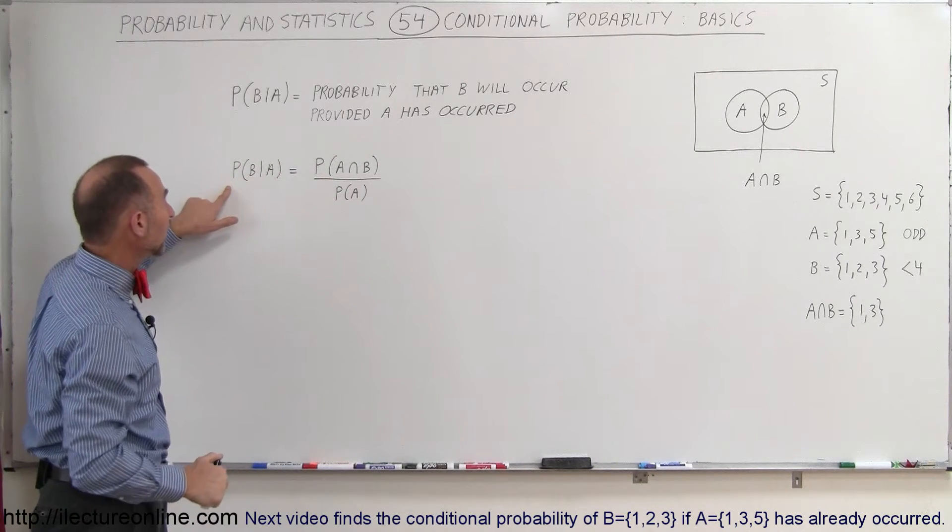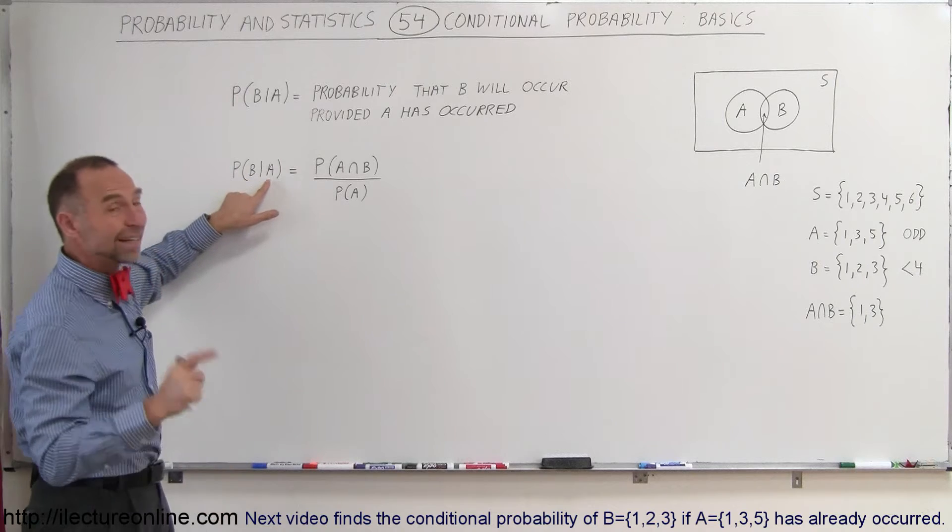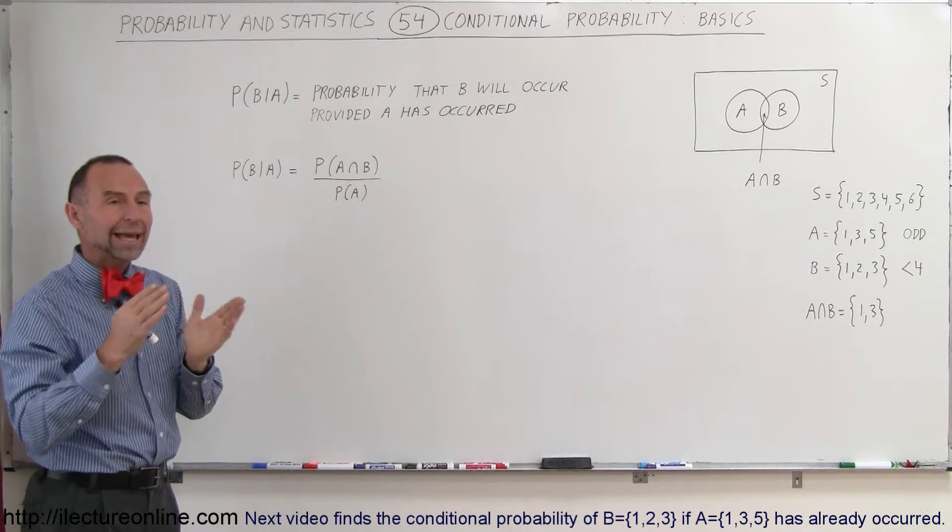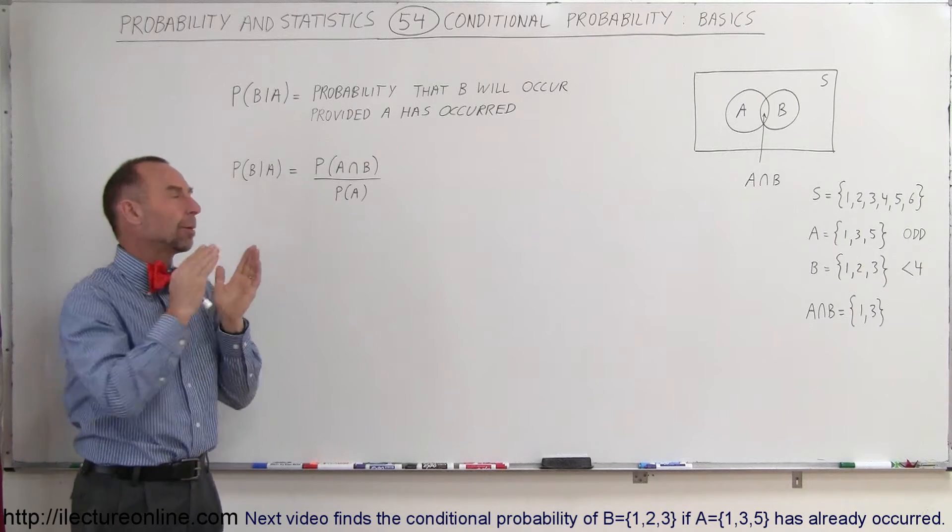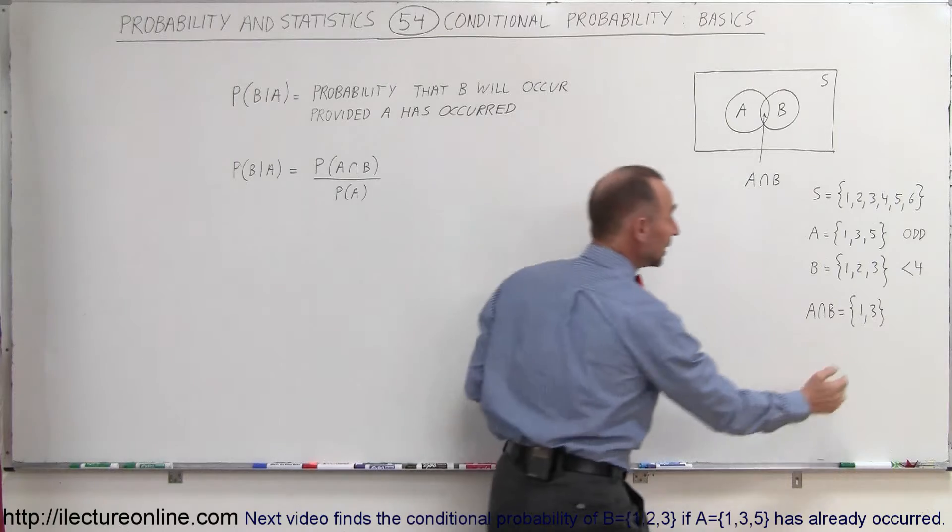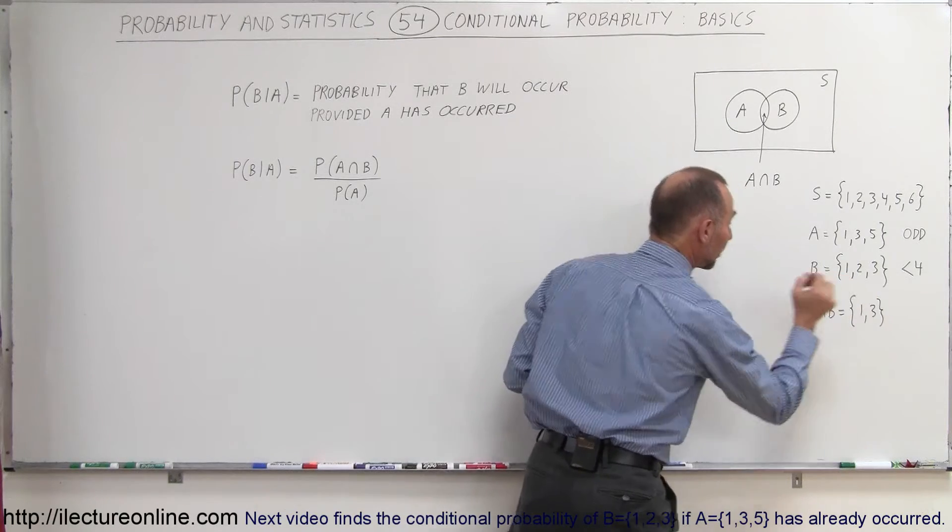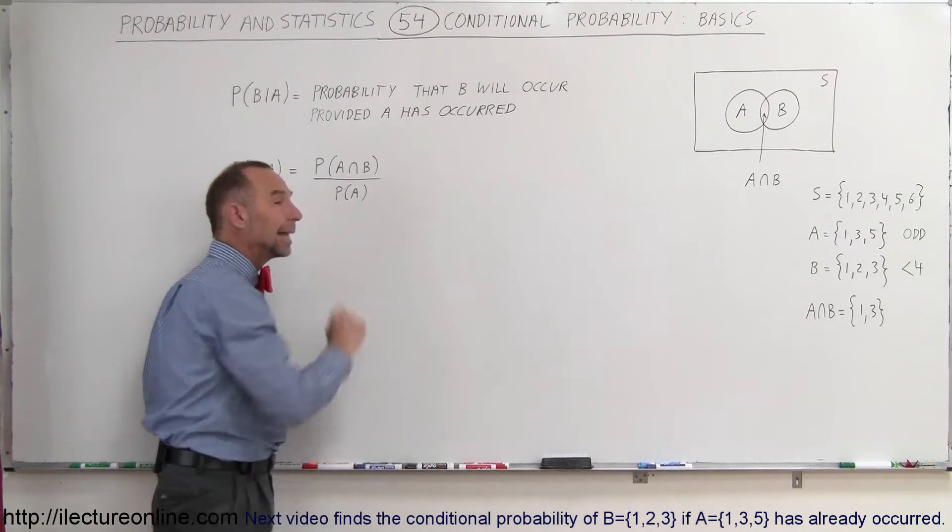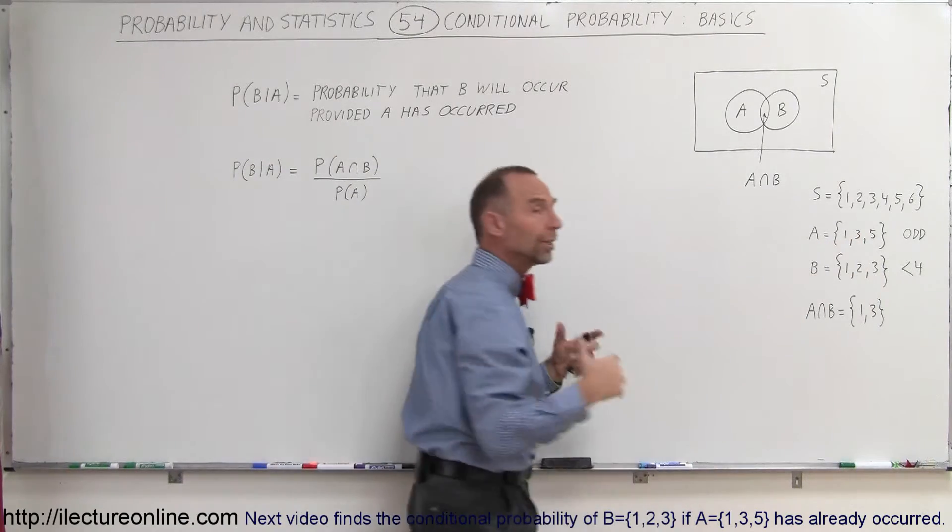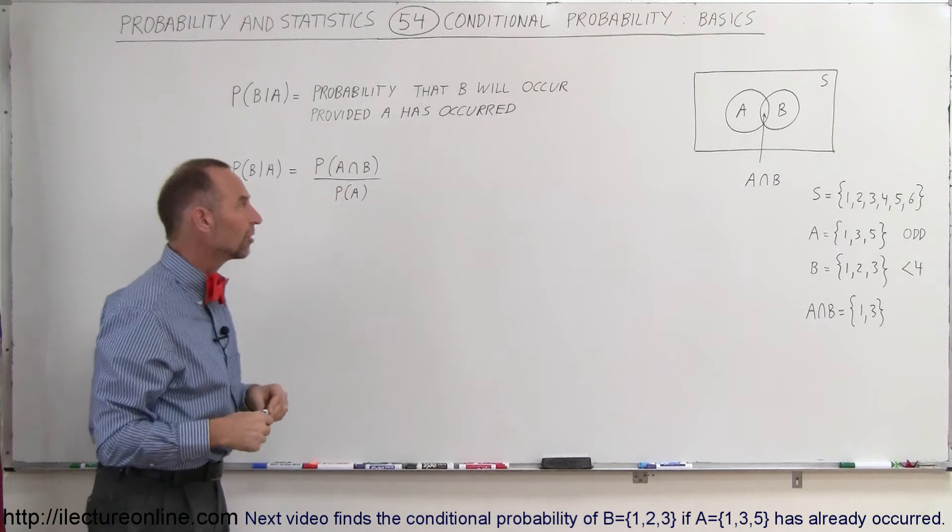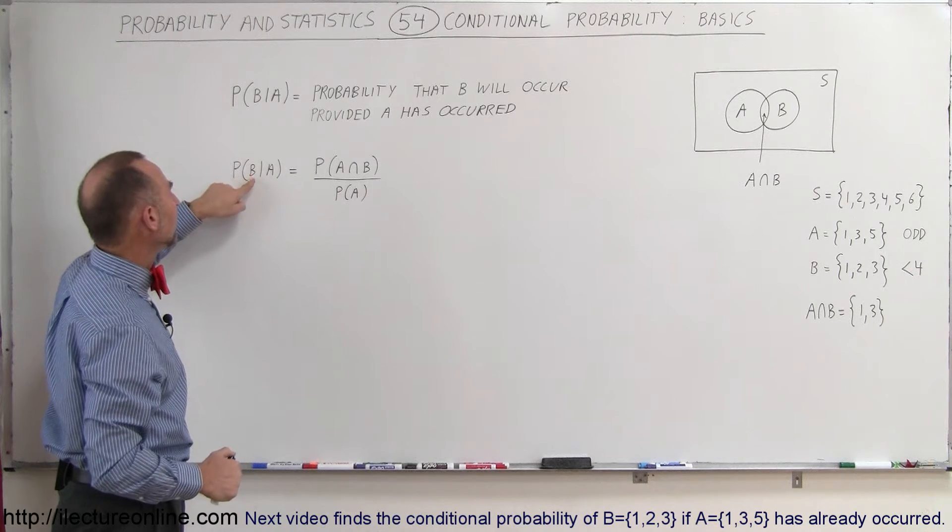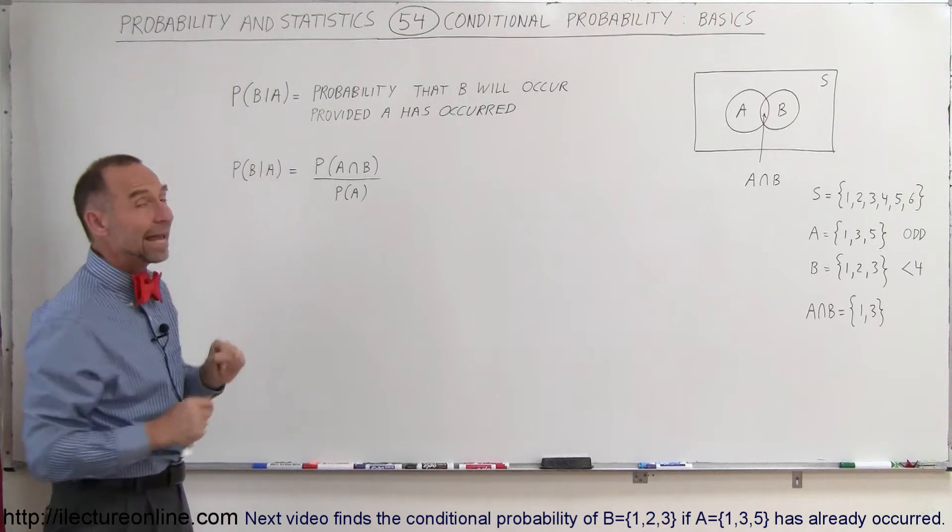We can then say that the probability that B will occur, provided A has occurred, is equal to the probability that the intersection of A and B has occurred, in other words the probability that you tossed a 1 or a 3, divided by the probability that A has occurred. And A is, of course, 1, 3, or 5, any one of the odd numbers when you toss a die. So that's the basic definition of the probability that B will occur provided A has occurred.